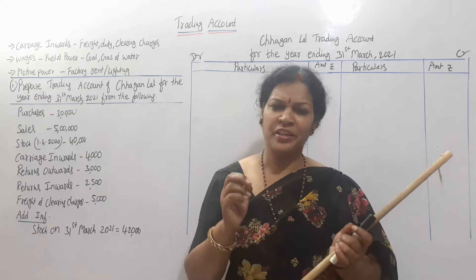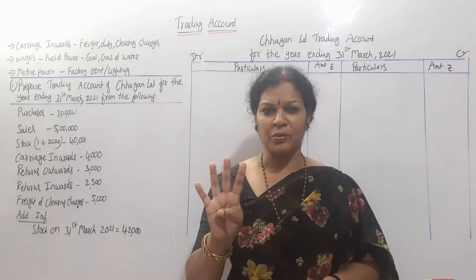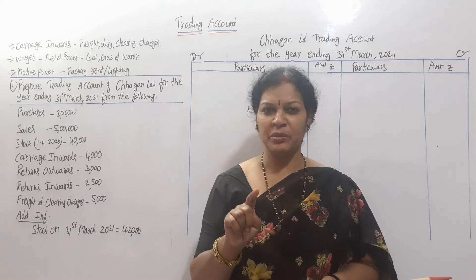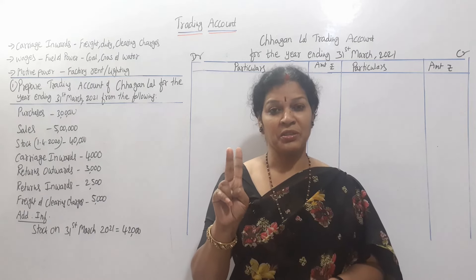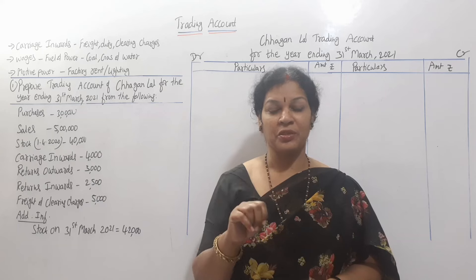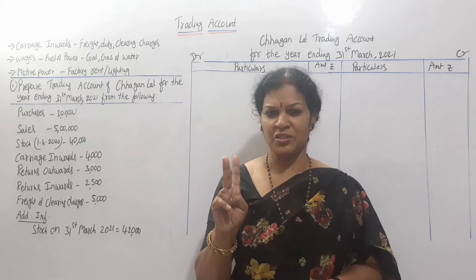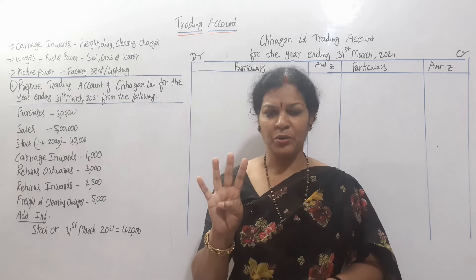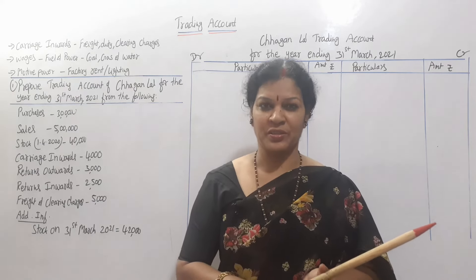We will get the basic concept of trading accounts. In the trading account, there are 4 items. The debit side items are opening stock and purchases. Purchase returns are deducted from purchases. The credit side items are sales and closing stock. The 4th item is direct expenses.